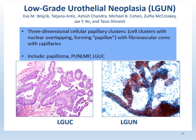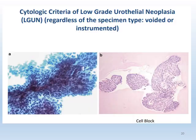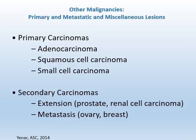The next category is LGUN — low-grade urothelial neoplasia — which includes papilloma, PUNLMP, and low-grade urothelial carcinoma. The diagnostic criteria include three-dimensional cell clusters with definitive fibrovascular cores. In our practice, LGUN is a very difficult diagnosis without concurrent biopsy or cystoscopic correlation.